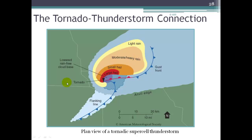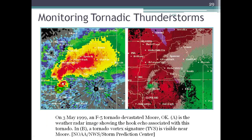We've got this hook pattern that we look for in our radar imagery. Here's some radar imagery from a storm from May 1999 from Moore, Oklahoma. It shows on the left the radar image — you see this hook shape that alerts meteorologists to a supercell that's likely to spawn tornadoes.